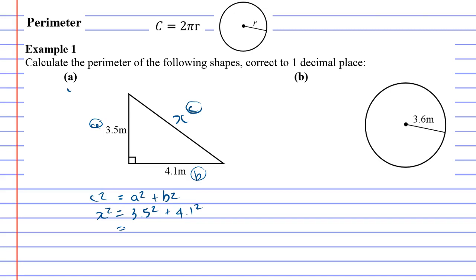3.5 squared plus 4.1 squared gives us 29.06, which is what x squared equals, meaning to find x we must find the square root of 29.06, which will be to one decimal place 5.4 meters.